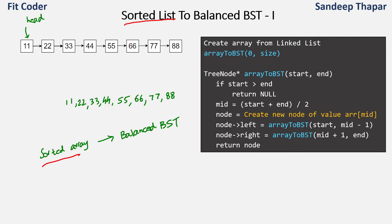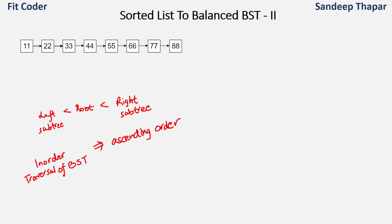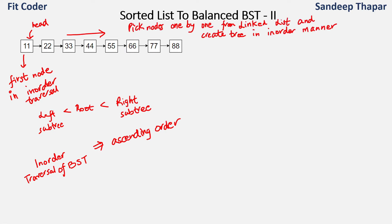Now let's look at the second method. We know that in a BST the root is greater than the left subtree and less than the right subtree. Also, the inorder traversal of a BST gives nodes in ascending order. If we leverage these two properties, we can solve this problem. The first node of the linked list will be the first node in the inorder traversal, since inorder traversal also gives ascending order. So 11 will be the first node in inorder traversal. Basically, if we do the inorder traversal of the tree, we should get the same order as present in the linked list. We will pick nodes from the linked list one by one and create the tree in inorder manner.